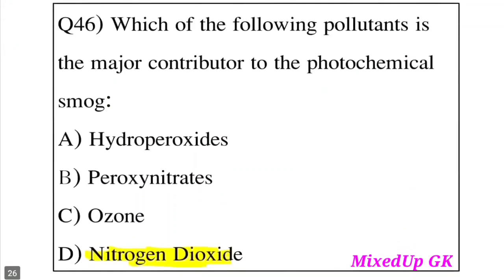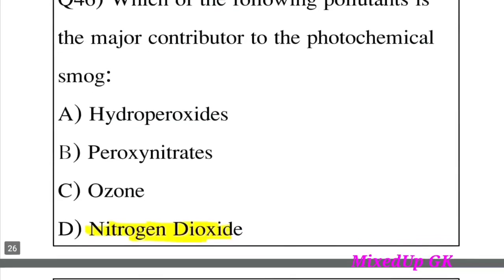Question 46: Which of the following pollutants is the major contributor to photochemical smog? Option A: Hydro peroxide. Option B: Peroxynitrates. Option C: Ozone. Option D: Nitrogen dioxide. The answer is Option D, Nitrogen dioxide. Nitrogen dioxide is the major contributor to photochemical smog.